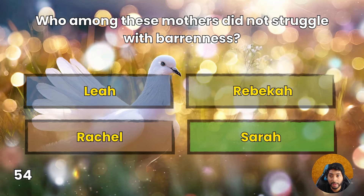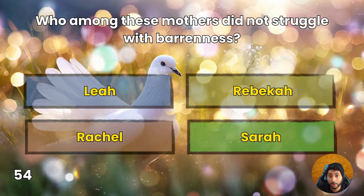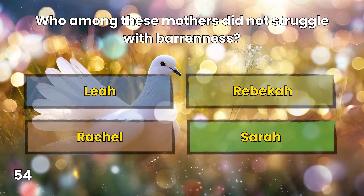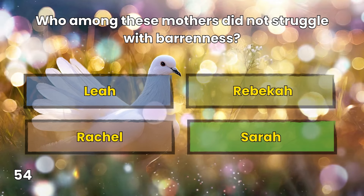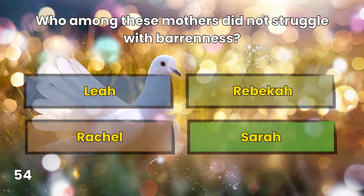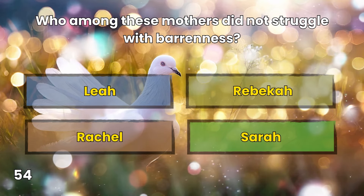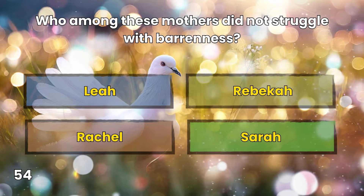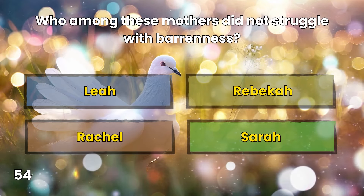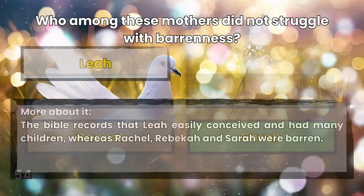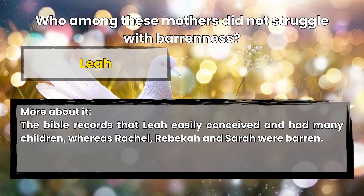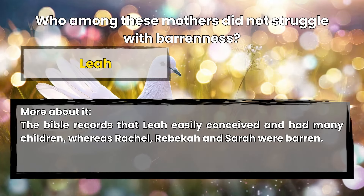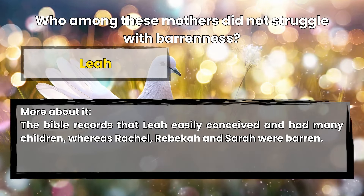Question 54: Who among these mothers did not struggle with barrenness? Leah, Rebekah, Rachel, or Sarah? Leah. The Bible records that Leah easily conceived and had many children, whereas Rachel, Rebekah, and Sarah were barren.